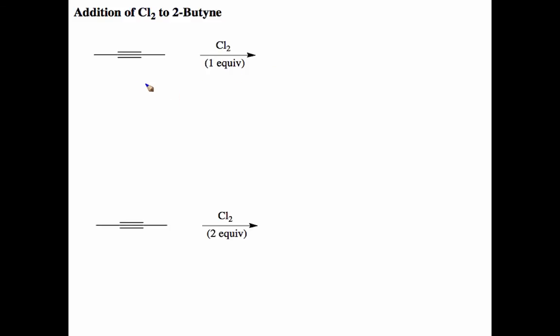But to figure out where those chlorines go, as well as the stereochemistry, it helps to actually look at the mechanism. So we have chlorine, which is just Cl₂, and I'll go ahead and put in my lone pairs on this chlorine.